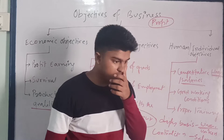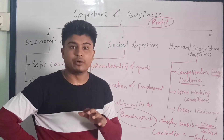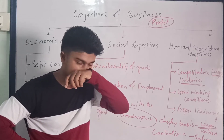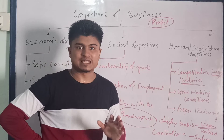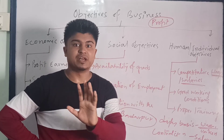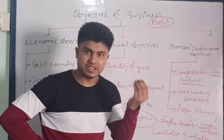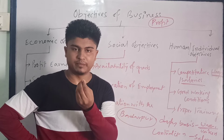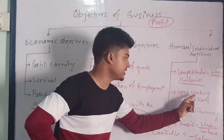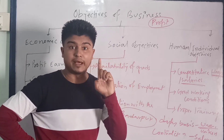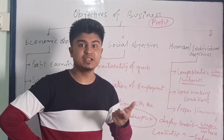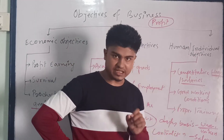Next is good working conditions — the place or area where workers or employees are working. The business should provide proper and good working conditions. For example, in the summer season, if five workers are assigned in a particular room and there is no fan or any proper facility, then the business is providing bad working conditions, which may lead to poor health or other problems among workers.